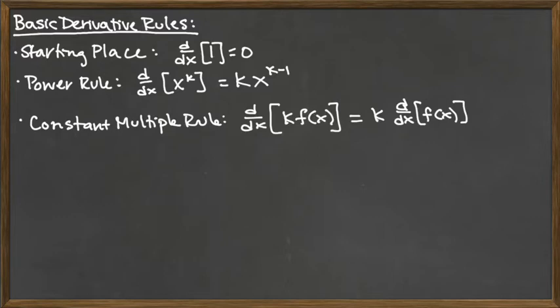The next thing we have is what I'm calling sum slash difference rule. Because really with the constant multiple rule, addition and subtraction behave the same way, because if we had subtraction, we could make it addition instead by saying plus a negative 1 times something. And so really sums and differences act the same way.